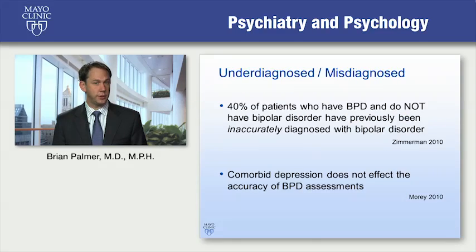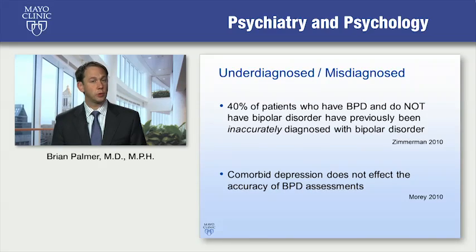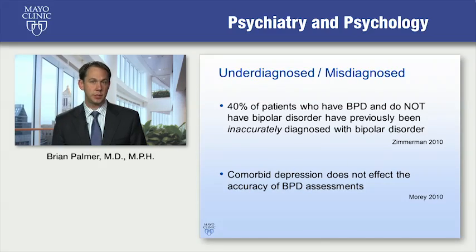Borderline is often very underdiagnosed and misdiagnosed. For example, 40 percent of patients who have borderline but do not have bipolar have been previously inaccurately diagnosed with bipolar — we've certainly seen that in clinical practice here. Comorbid depression does not affect the accuracy of borderline assessments, so borderline can be accurately diagnosed in the midst of a major depressive episode by taking an accurate history and focusing on symptoms.